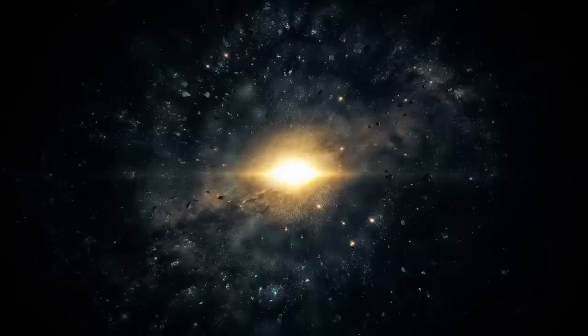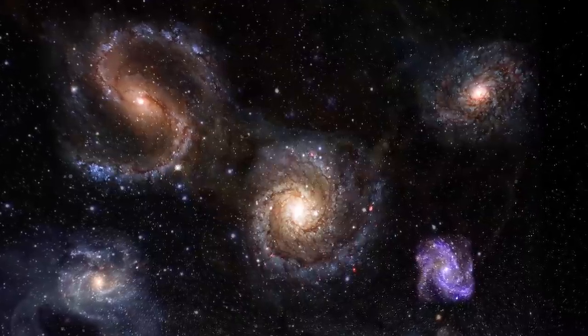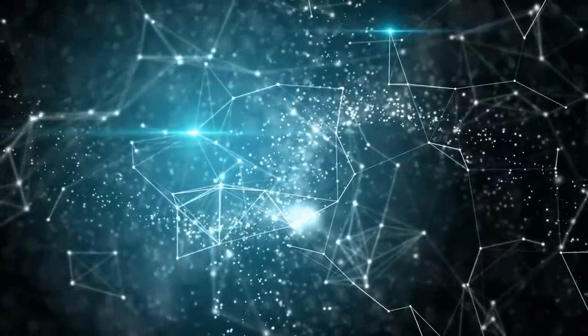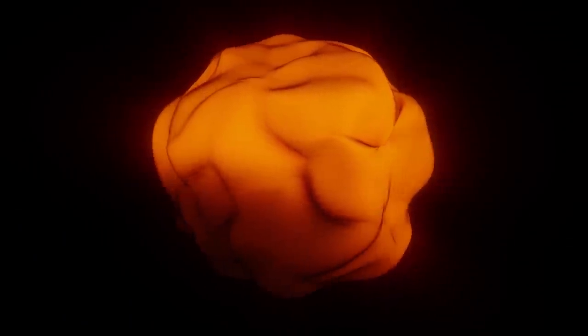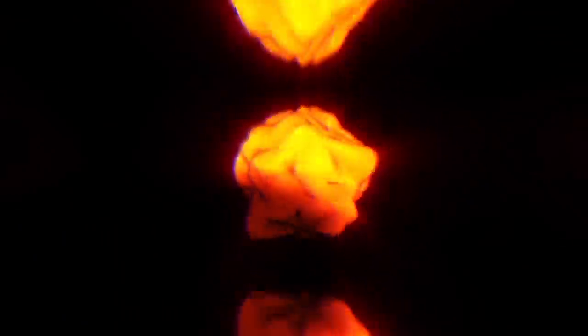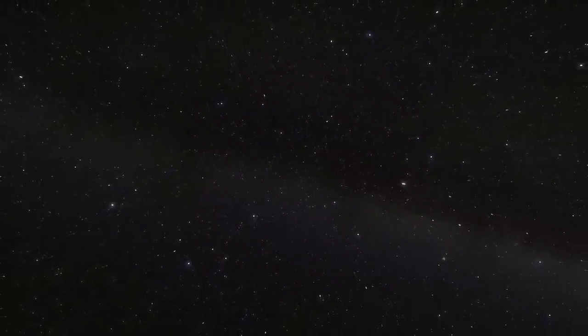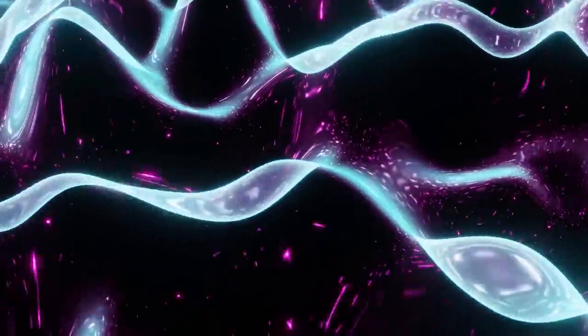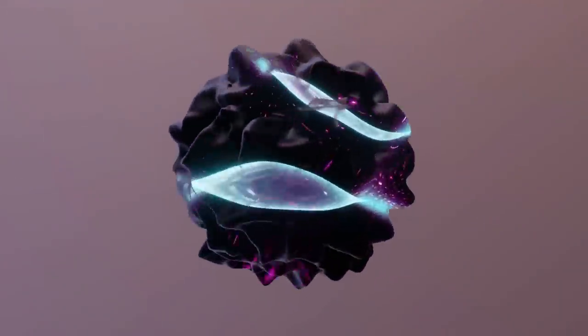As gravity would start winning, it would pull everything back together and the universe would contract instead. This contraction will pull all galaxies, stars, planets, black holes, nebulas, and constellations together and continue to compress them until they become an infinitely dense singularity again.